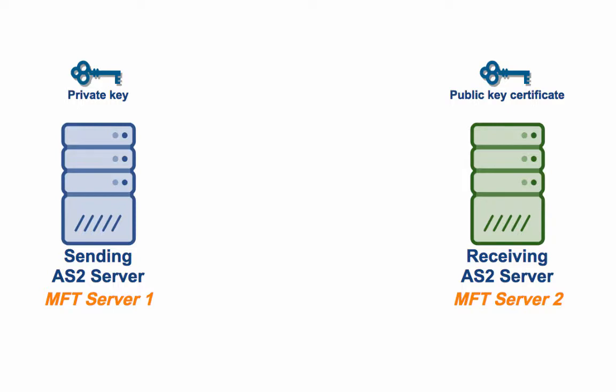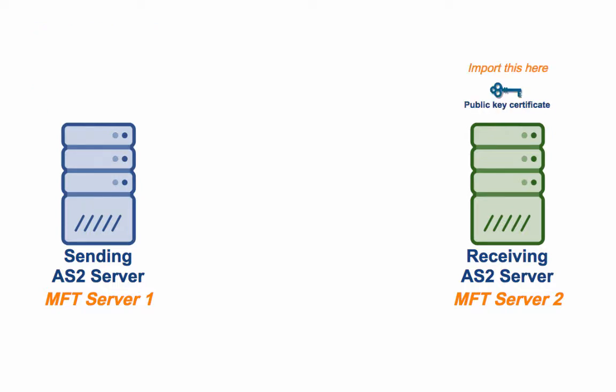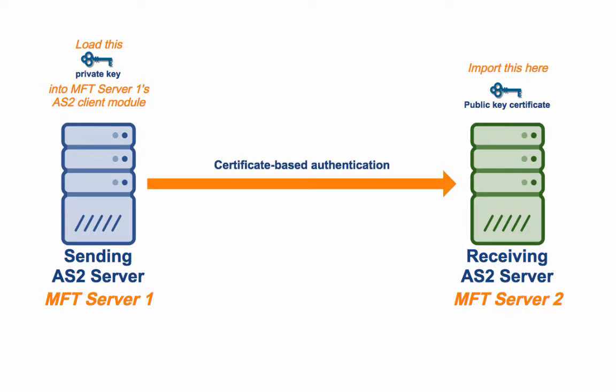First, let's create the private key and its corresponding digital certificate. The first steps are going to be carried out on MFT Server 1, also known as the client. That's where we'll generate a private key and a corresponding digital certificate. The digital certificate will contain the private key's corresponding public key. Once this certificate, along with the public key, is imported into MFT Server 2 and the private key loaded onto the MFT Server 1 side AS2 client module, the two parties will then be ready to perform certificate-based authentication.